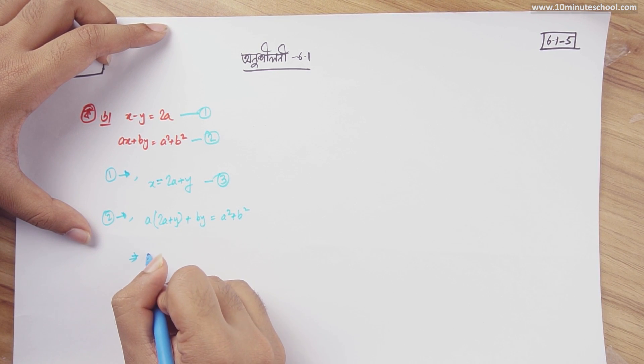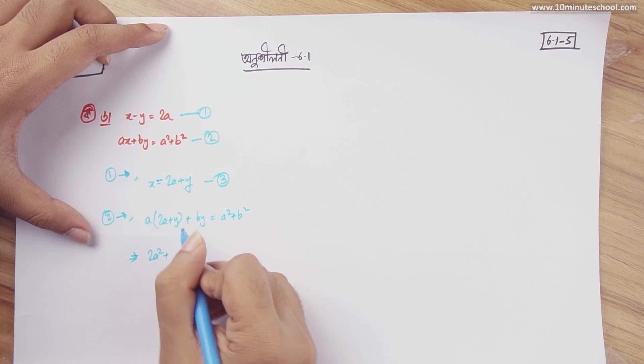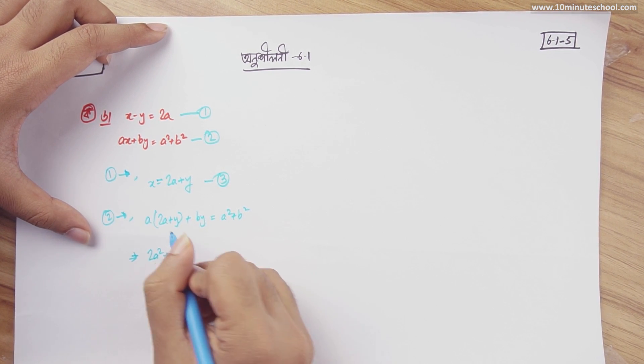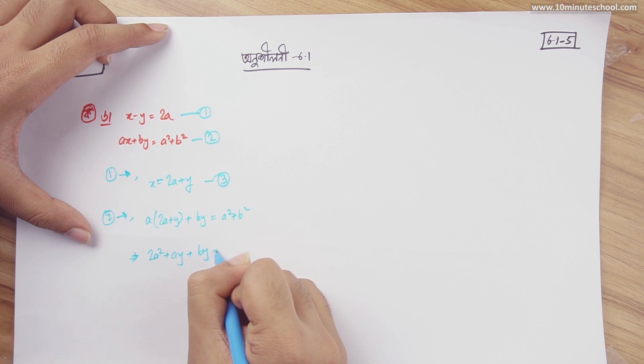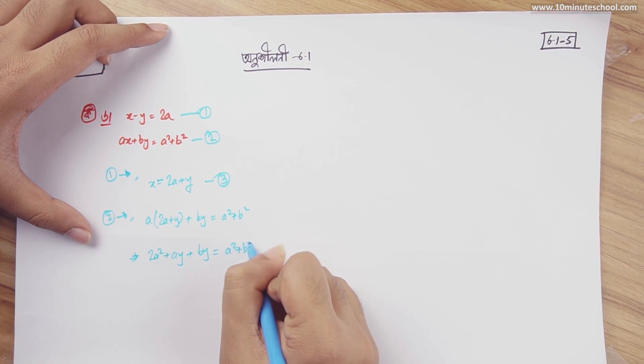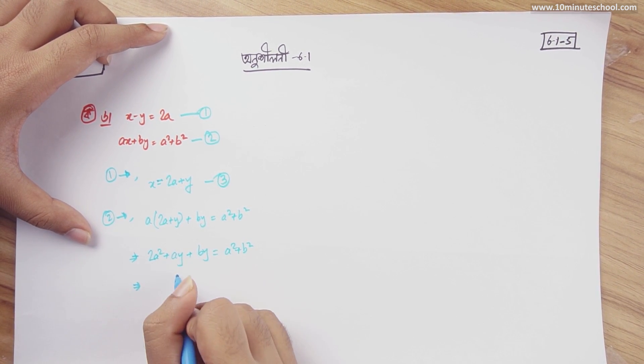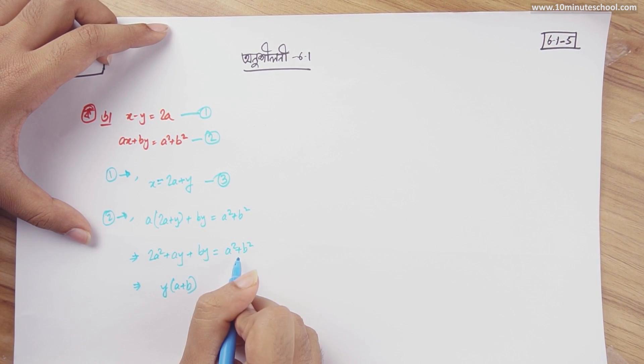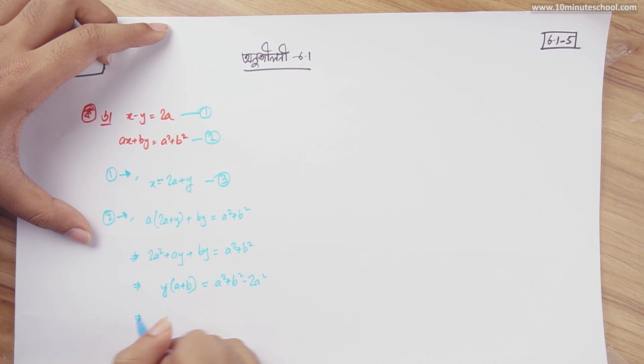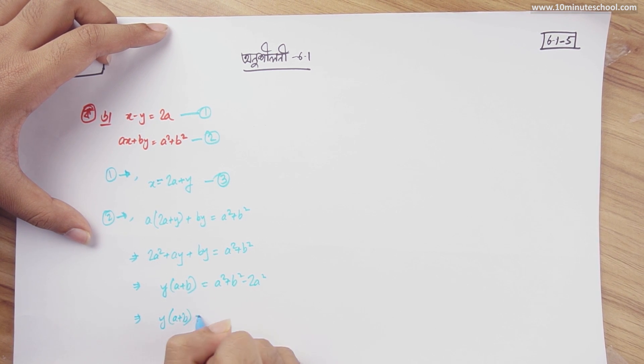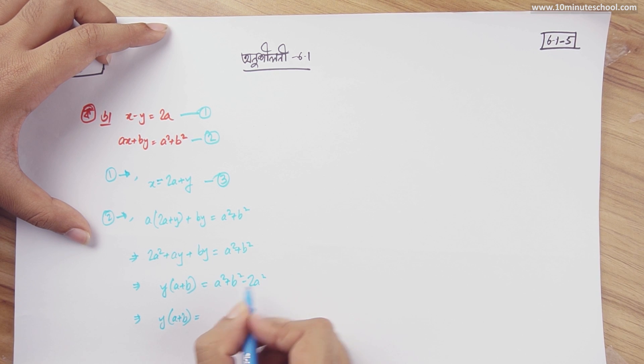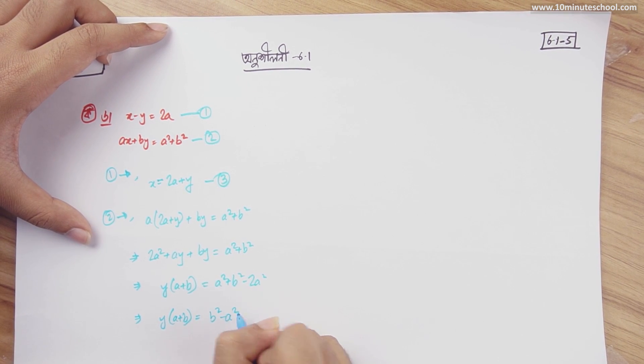2a minus a, 2a squared plus ay plus by, a squared plus b squared equal to this. y is equal to a plus b, and 2a squared is a squared plus b squared minus 2a squared. We can write y into a plus b equal to a squared minus 2a squared minus a squared b squared minus a squared.